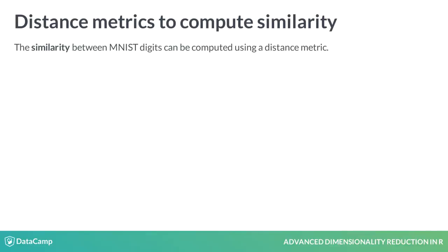The similarity between MNIST digits can be quantified using a distance metric. A metric is a function that for any given points, the output satisfies the following properties.